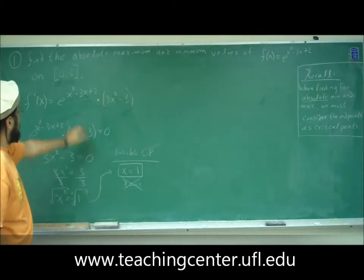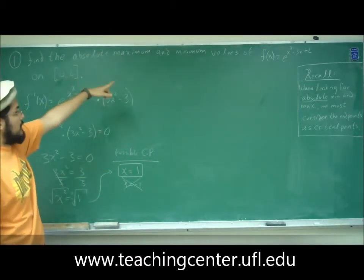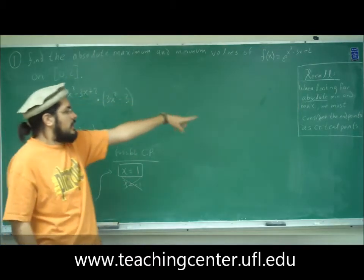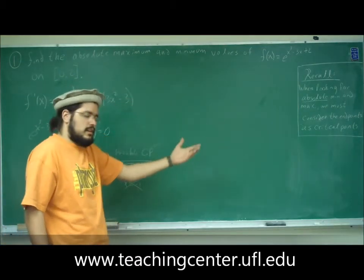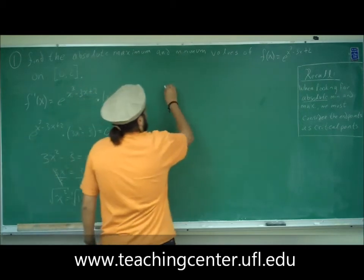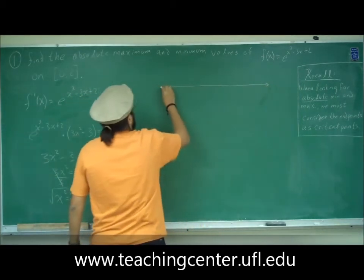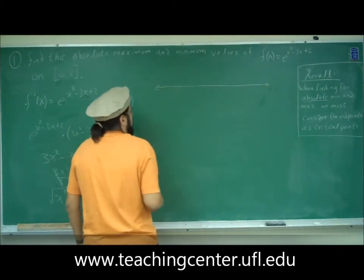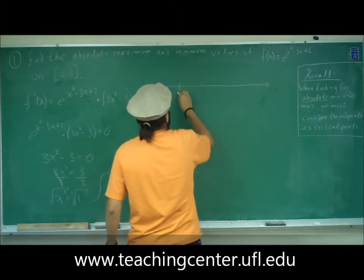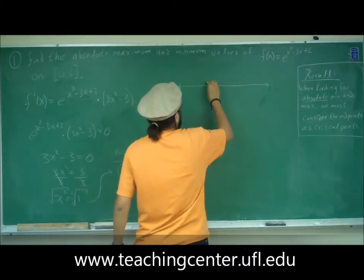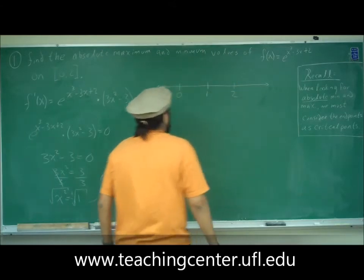Now we have x = 1 as a critical point, and we also have 0 and 2 as critical points because we're looking for the absolute max or min, and we must consider the endpoints. Drawing a number line, we have 0, 1, and 2 as our critical points.